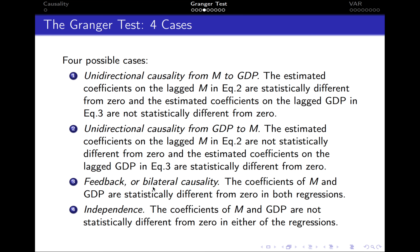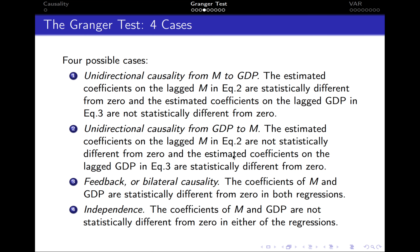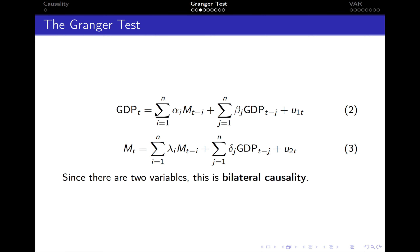We can also have feedback or bilateral causality, where the coefficients of m and GDP are statistically different from zero in both regressions — meaning alphas are statistically significant and deltas are statistically significant. And we can also have the fourth possibility where the variables are independent of each other, meaning the coefficients of m and GDP are not statistically different from zero in either of the regressions — alphas are not statistically significant and deltas are not statistically significant.